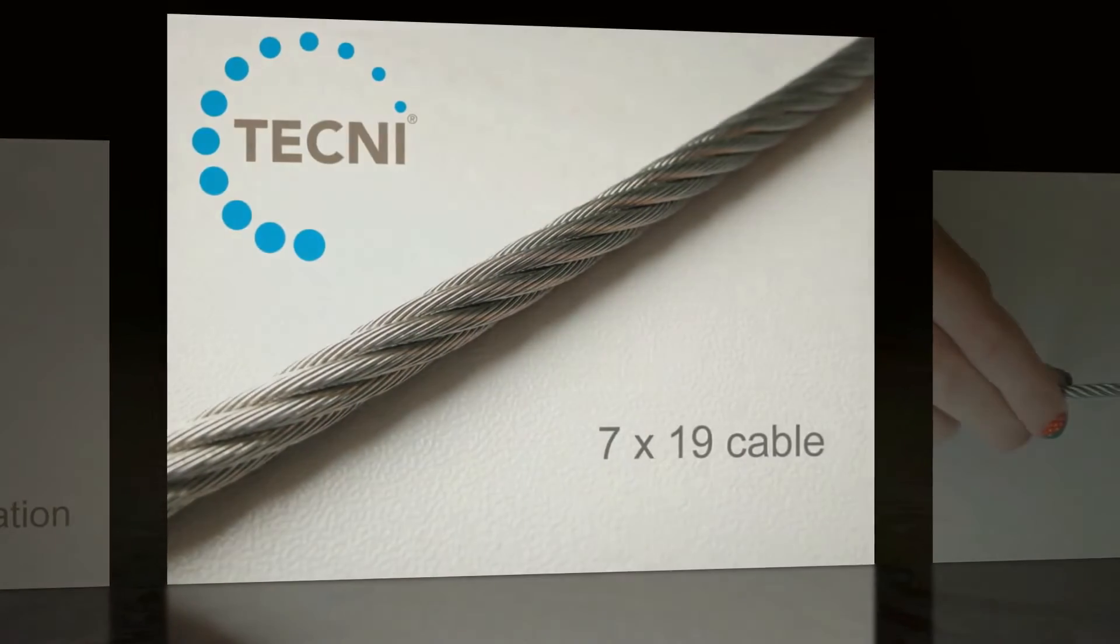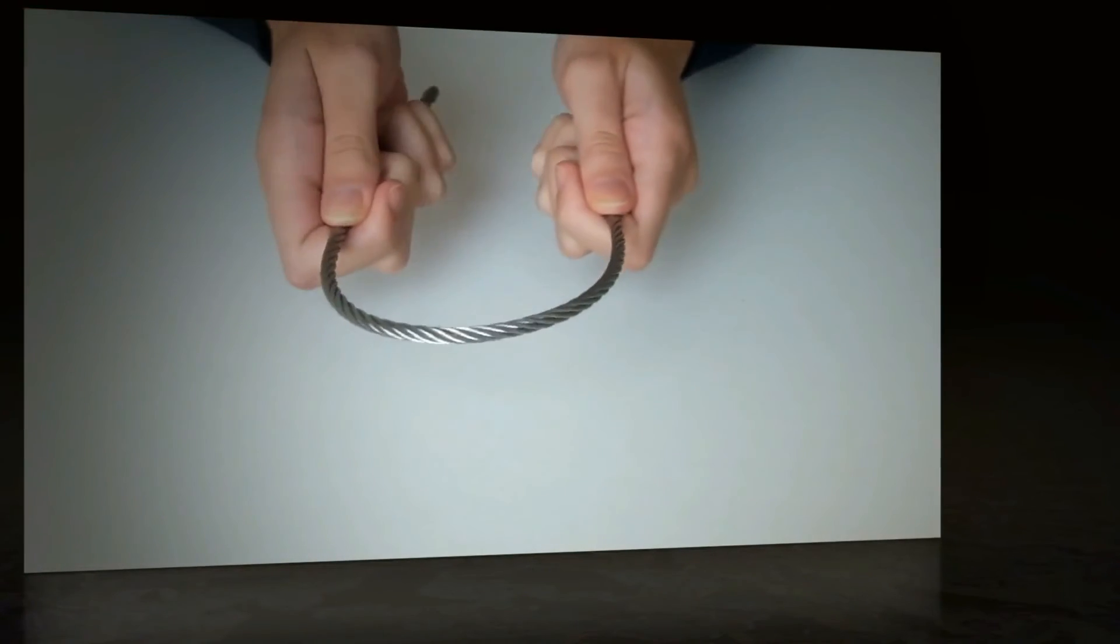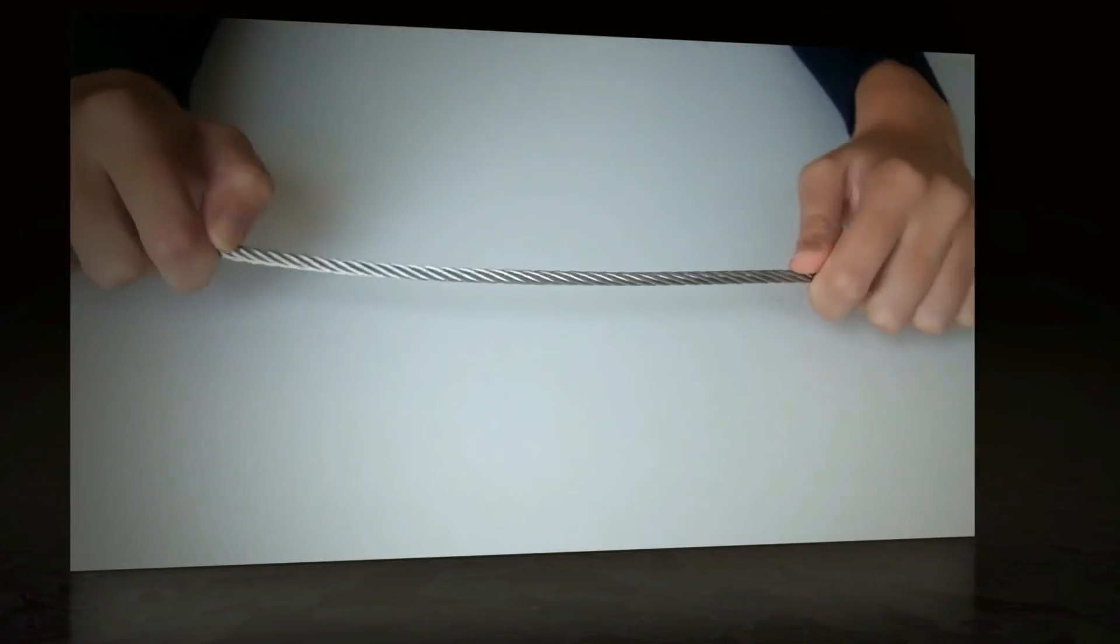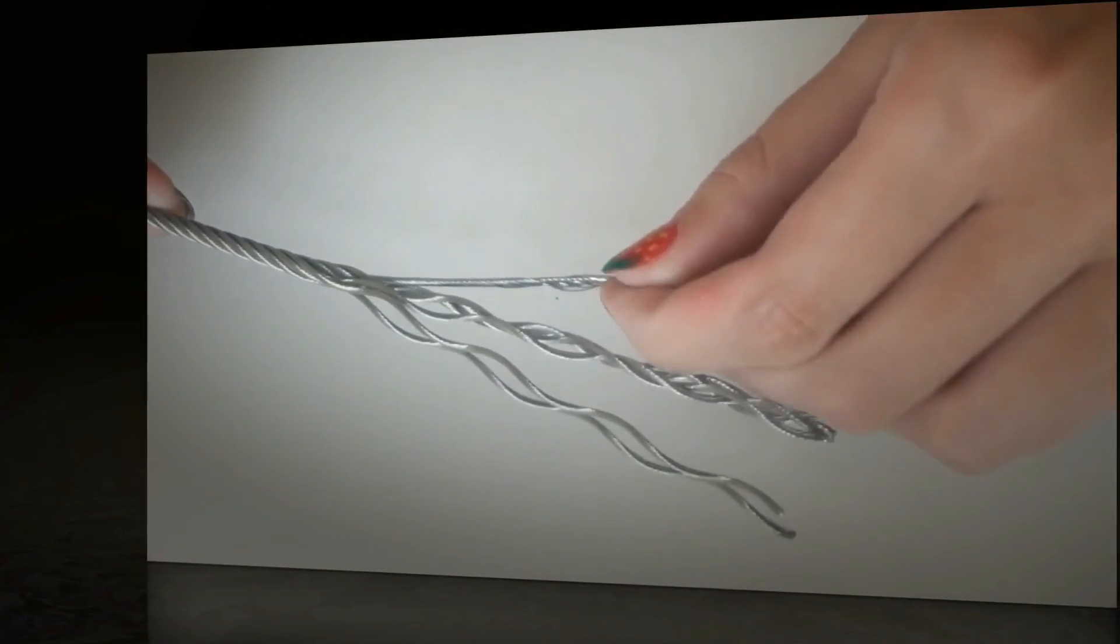7x19 with seven strands of 19 wires, giving a total of 133 wires. It is the most flexible of the standard small diameter cable constructions. It has more stretch and a lower breaking load than the two other cable types.